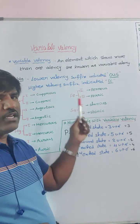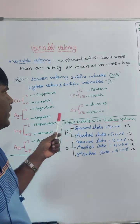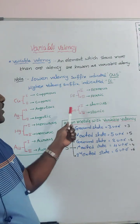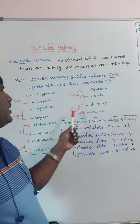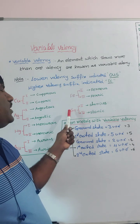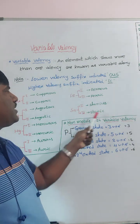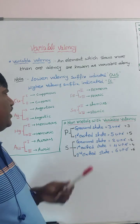These names are taken from the Latin name. Iron in Latin is Ferrum. Next, Tin — its Latin name is Stannum — so lower valency is stannous, higher valency is stannic.